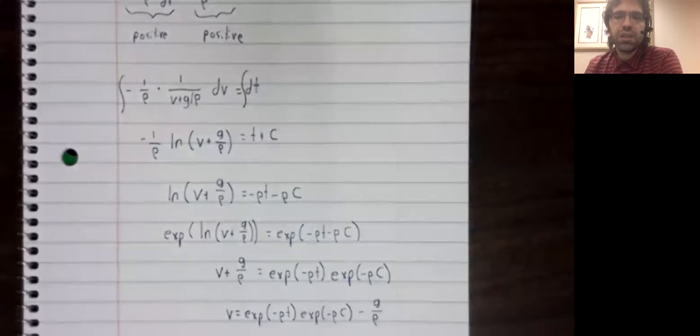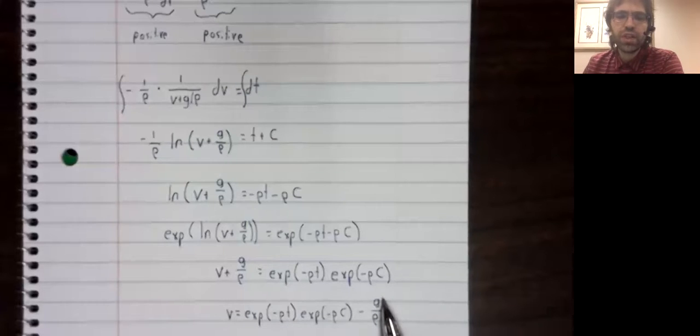But we're going to work a little longer with this because we don't love this constant C. In this equation, almost everything has a real world meaning: velocity, drag coefficient, time, drag coefficient, gravitational constant, drag coefficient. And then you have this C, which is just an arbitrary constant of integration.